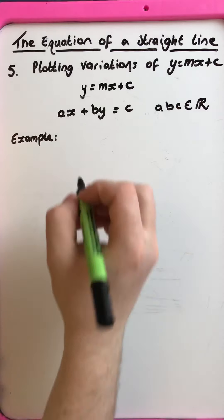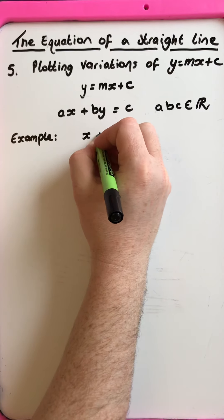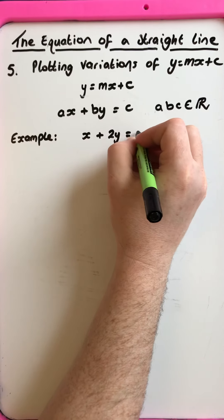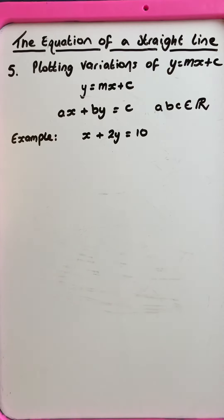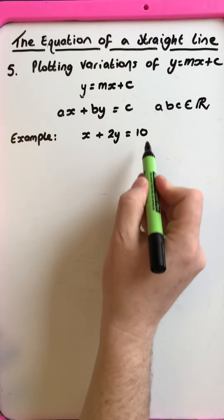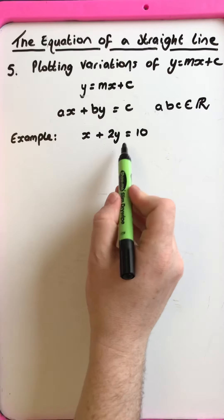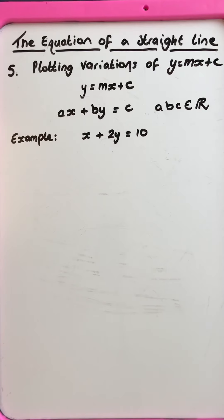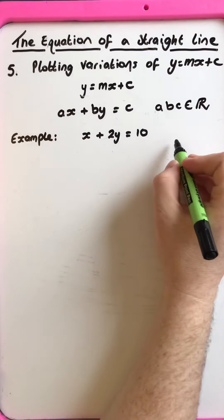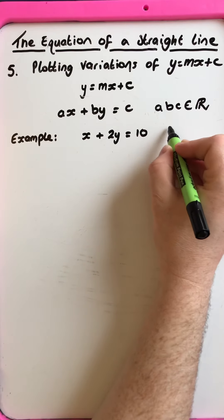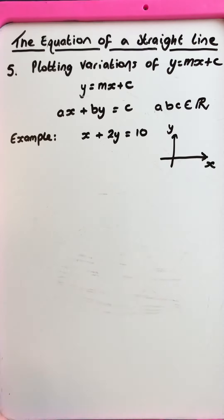So let's look at an example. Let's look at plotting the graph of x plus 2y is equal to 10. So we could rearrange this formula into y equals mx plus c and look at the methods that we've discussed already. However, we are going to look and concentrate on finding pairs of coordinates when x and y are both equal to 0, so we'll find those intercepts on the x and y axis.